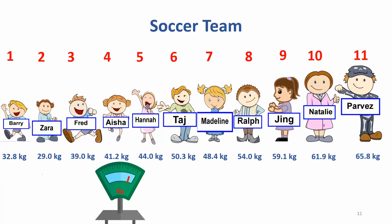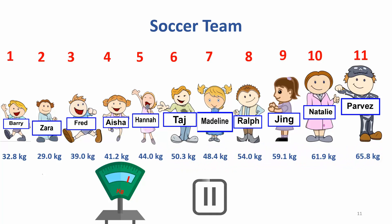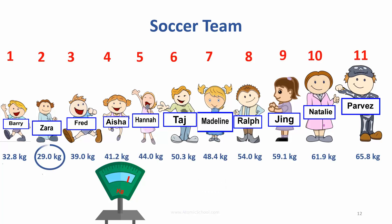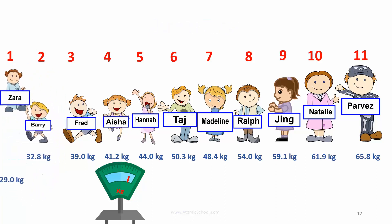Going from lightest to heaviest, who should come first? Zara is the lightest, so she's first. She needs to swap with Barry.